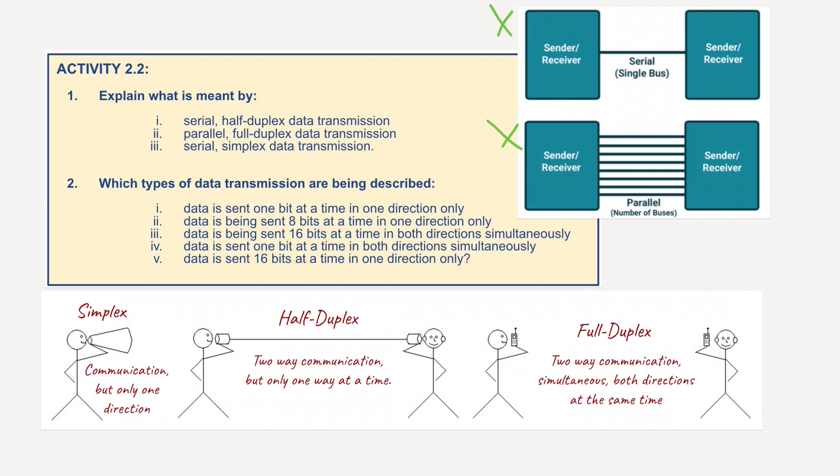So that's serial and parallel, but we've got three more terms to look at. First of all, if I go down here and look at simplex, simplex is basically communication or data being sent only in one direction. In the example you can see here, a man with a megaphone is speaking, but he's not receiving any information back. So in simplex mode, the data transmits in one direction only, from one system to another. The sending device can only send the data and cannot receive it. But on the other hand, the receiving device can only receive the data and cannot send it.